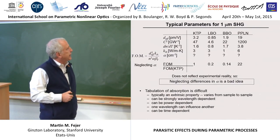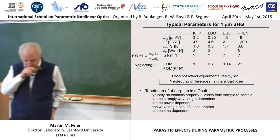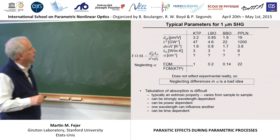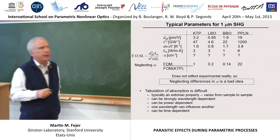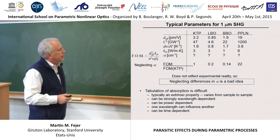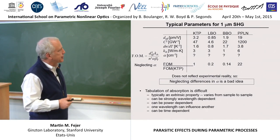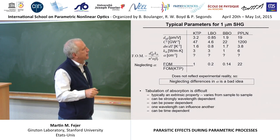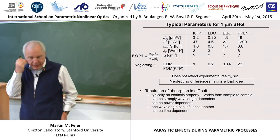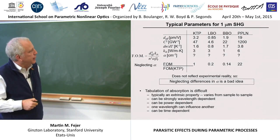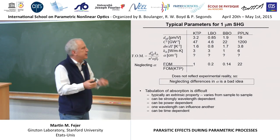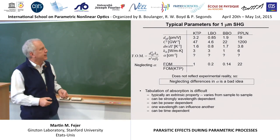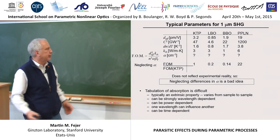If we add the extra pieces — dn/dT and thermal conductivity — to the figure of merit but don't include alpha because the tables didn't tell us, we still find lithium niobate looks much better than KTP or LBO or BBO. Given the experimental reality of what is actually used, the conclusion is that neglecting differences in absorption coefficient is not a good idea if you actually want to understand how well a crystal will work in many real-world applications.